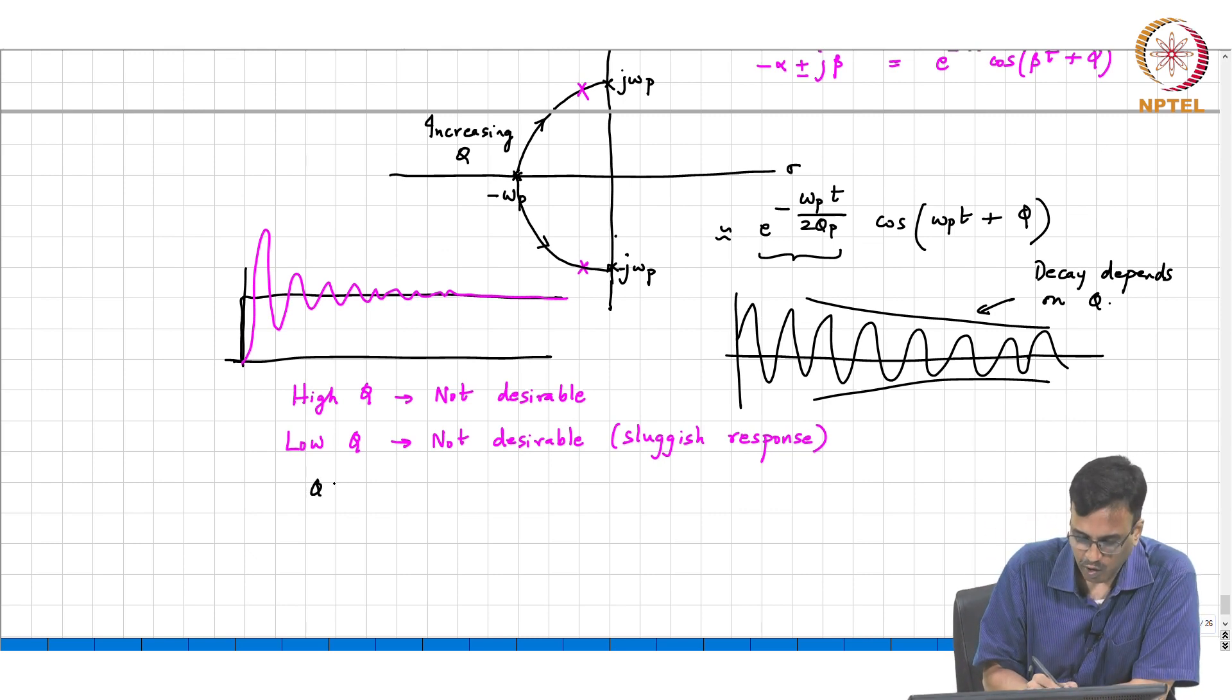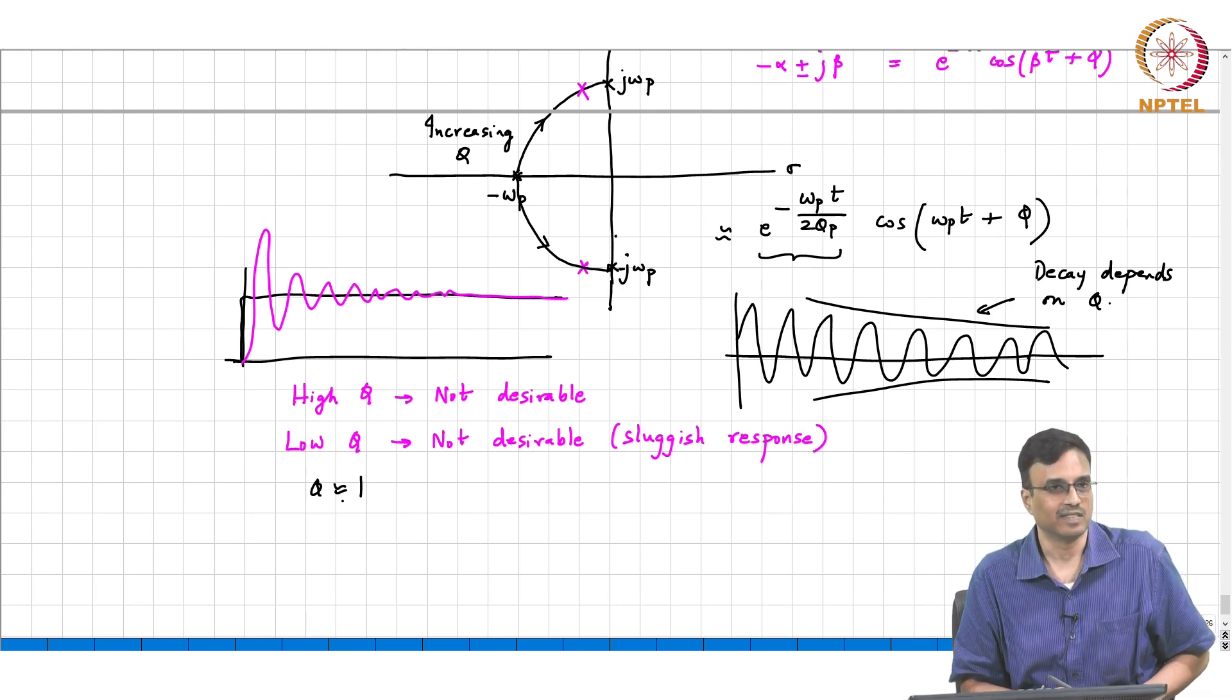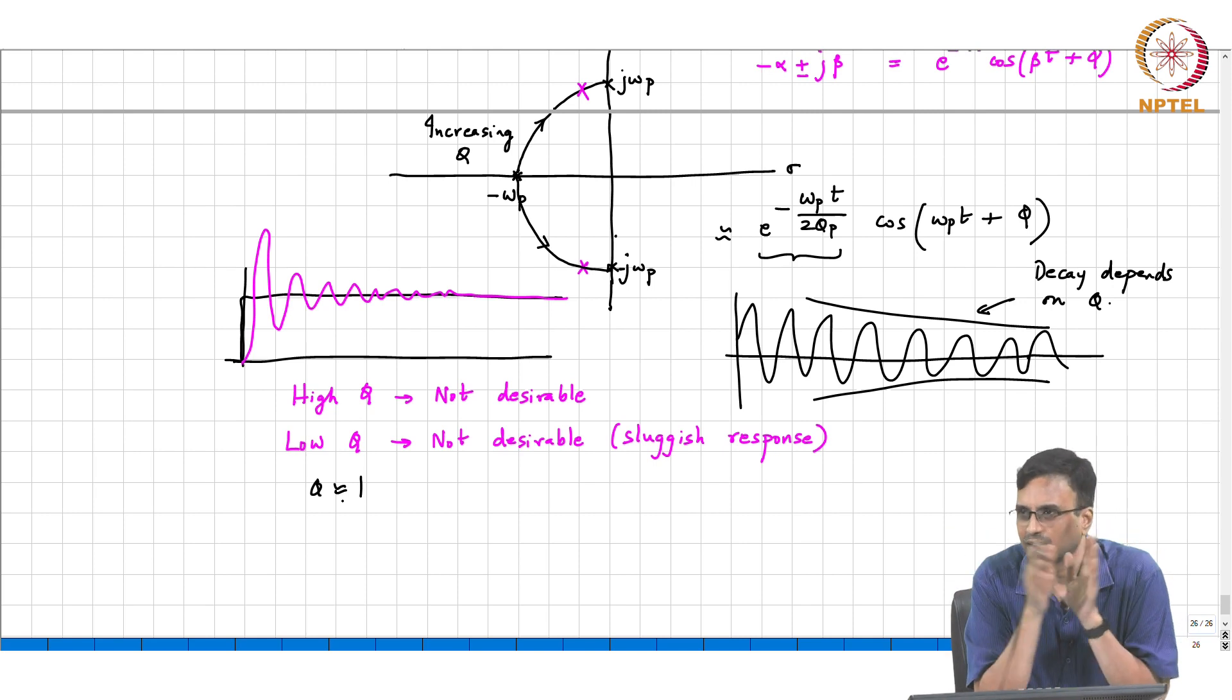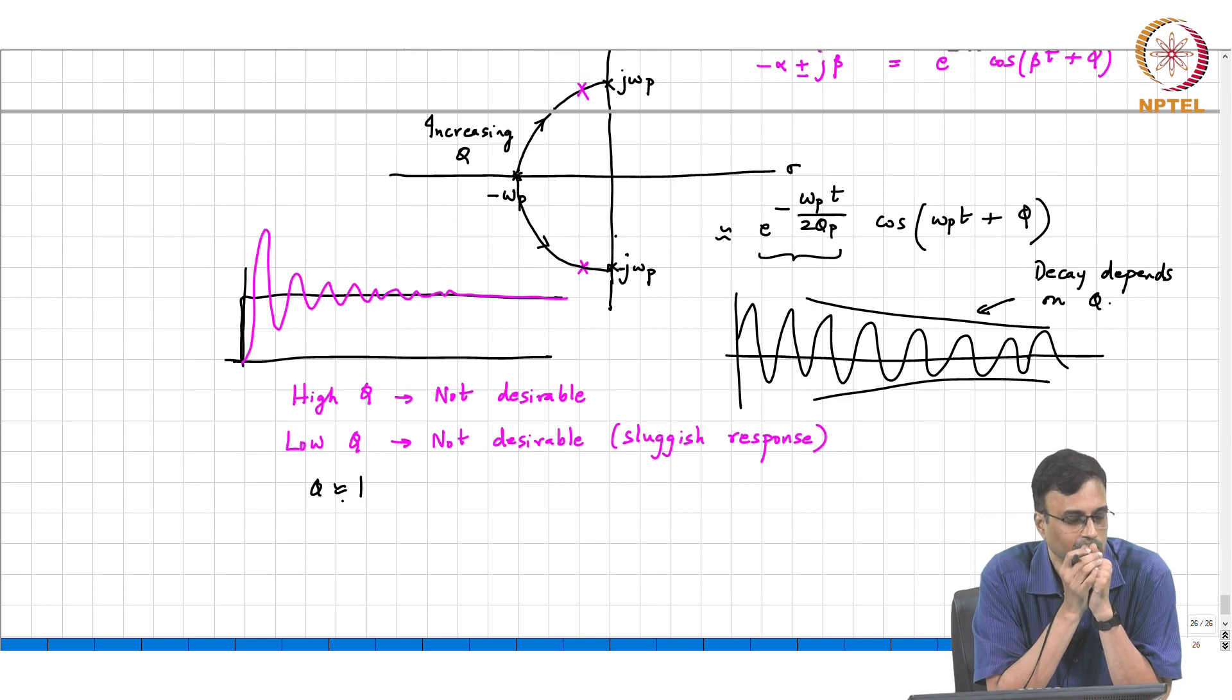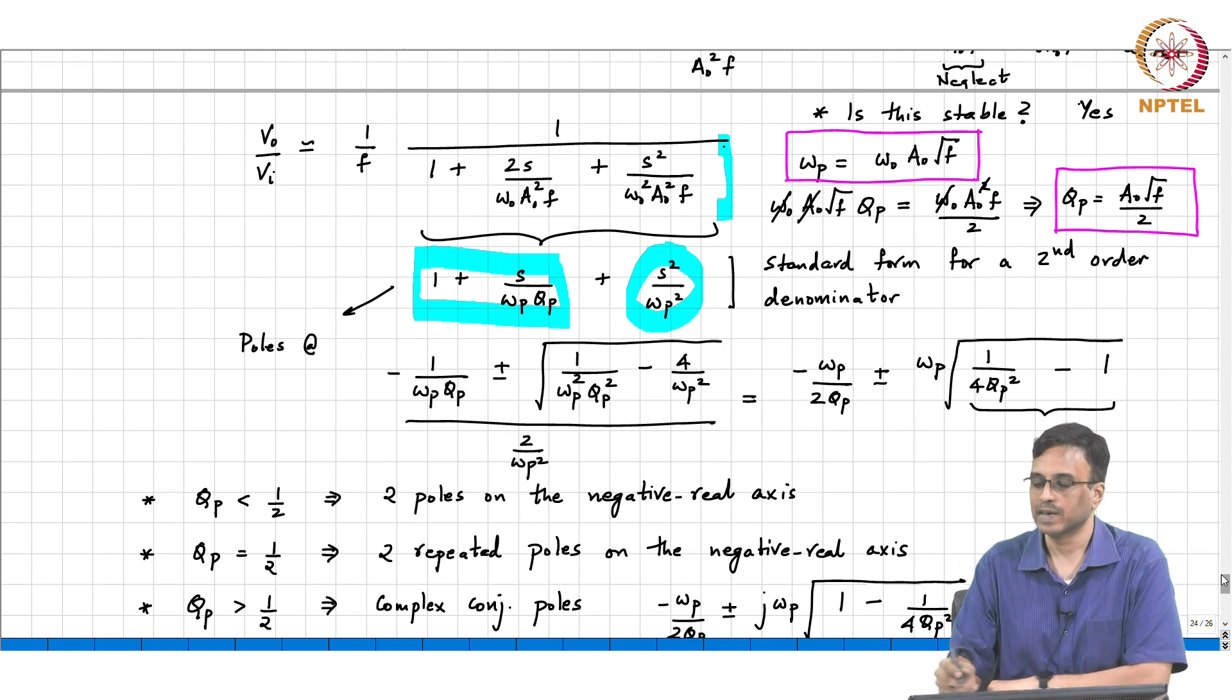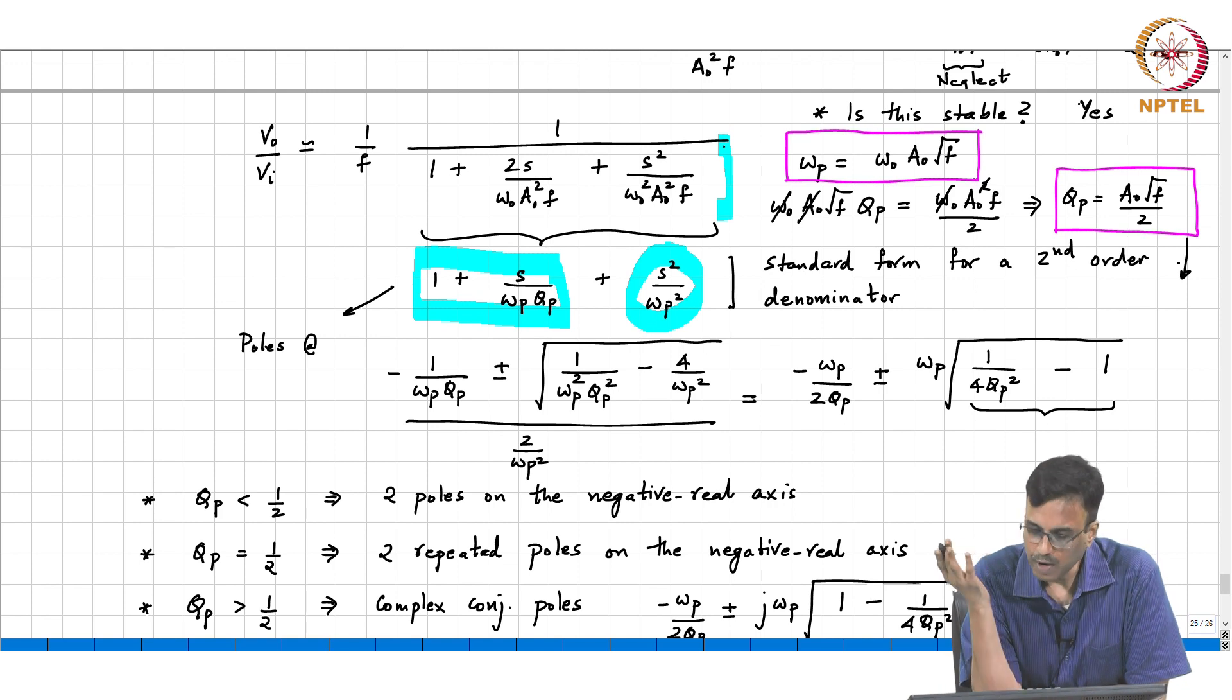Q of the order of 1 is a reasonable Q. As you said 1.5, heavens are not going to fall if you choose 1.5, heavens are not going to fall if you choose 0.8. But the Q you want for a closed loop system, for the poles, is roughly of the order of 1 - just critically damped or maybe slightly some small overshoot. Now with this background, let us go back to our actual system and figure out what Q we have.